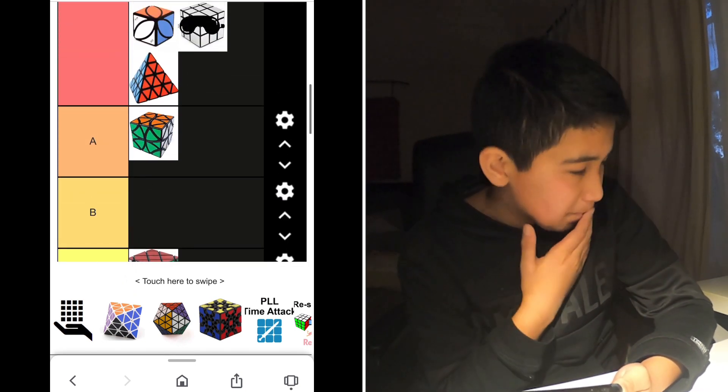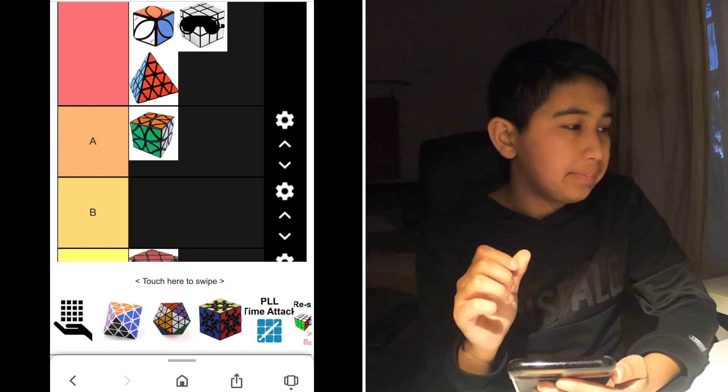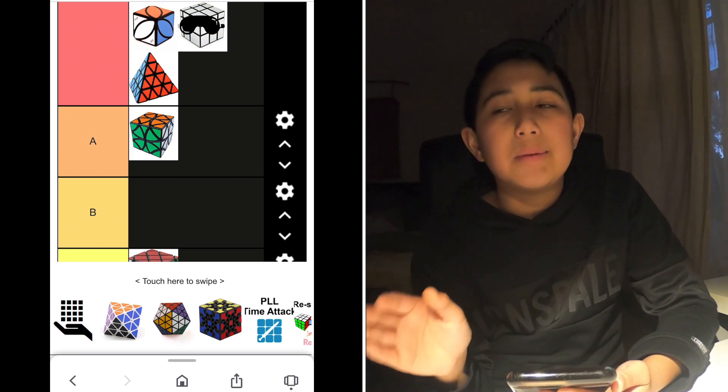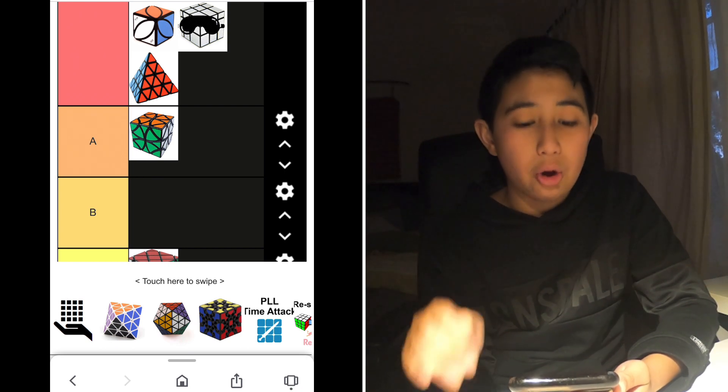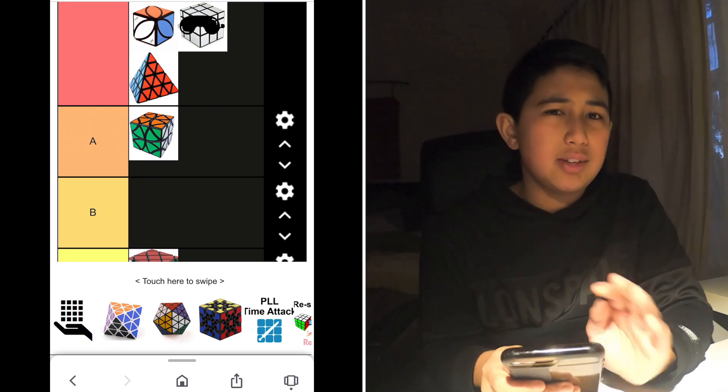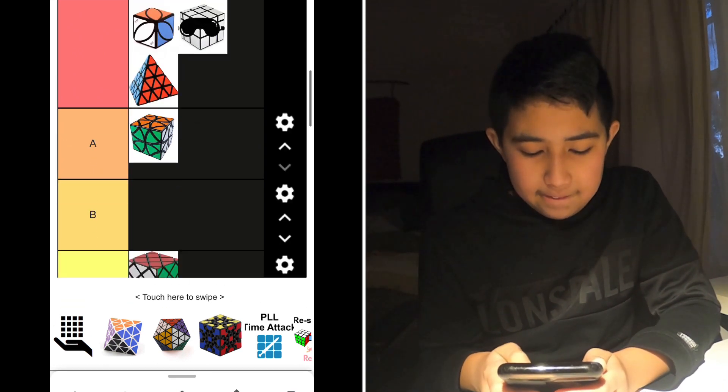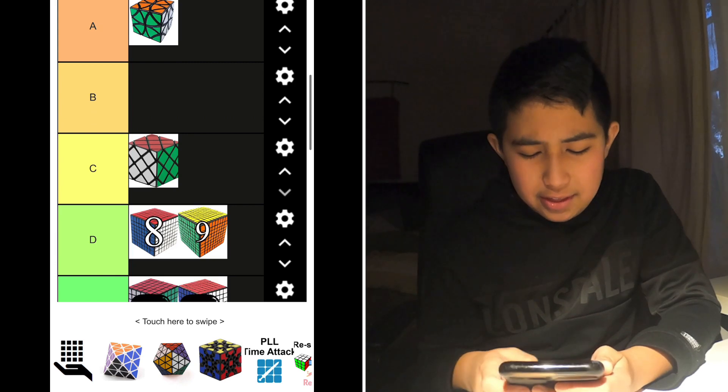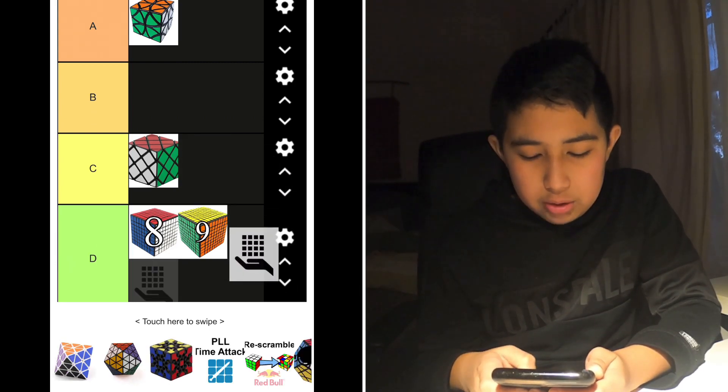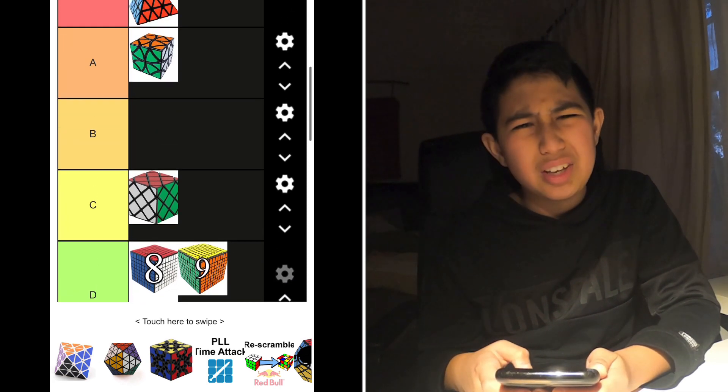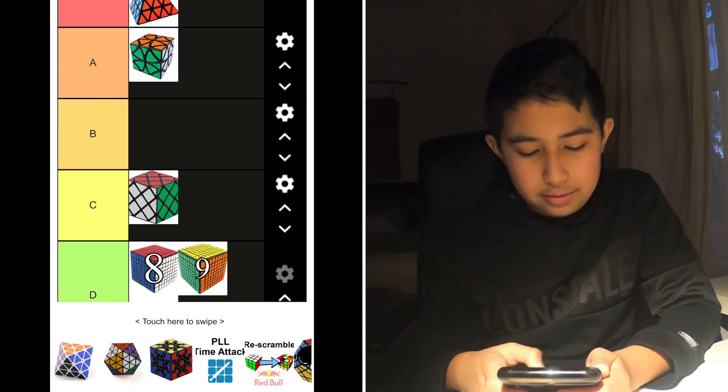4x4 one-handed. Here's the thing with one-handed events: I don't think we should go over 3x3. If we do, then just go 4x4, and that's it. Because 5x5 one-handed would just take too long, and 4x4 one-handed, like, I don't think it's that good of an addition. But it would be, I don't know, probably D tier. I wouldn't, I don't think it's a great addition.